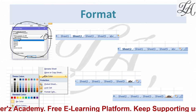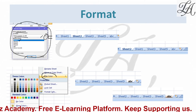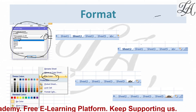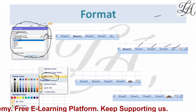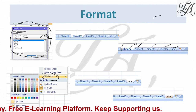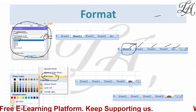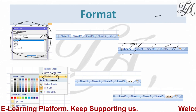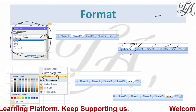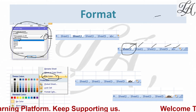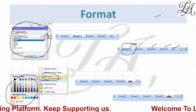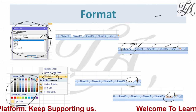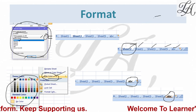Next is Tab Color. This option is used to color your sheet tabs. By default, the tabs are shown in blue. If you want to change the color of a particular tab, click Tab Color — all available color options will appear, and whichever you select will become the color for that particular sheet's tab.